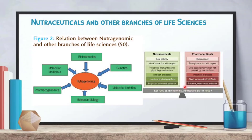Now, if we talk about nutraceuticals and other branches of the life sciences, nutraceuticals and nutrigenomics link with many systems. For example, it has a role in pharmacogenomics, molecular biology, molecular medicines, bioinformatics, genetics, and molecular nutrition. There is also a comparison of nutraceuticals and pharmaceuticals given here. The foundational concept is: let food be the medicine and medicine be the food.